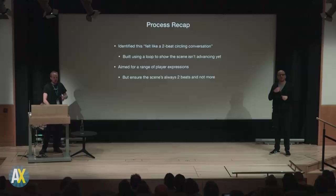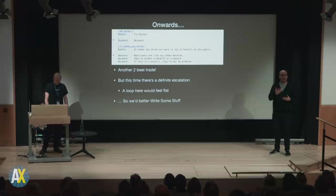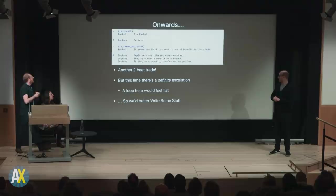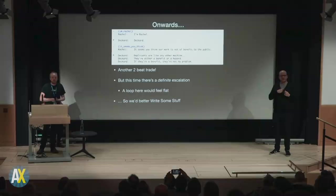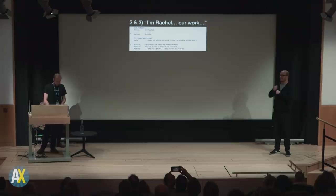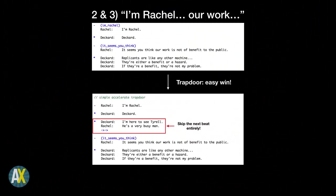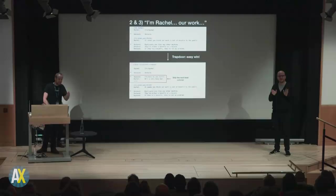Moving onwards: Rachel to Deckard — 'Do you think our work is not a benefit to the public? Replicants are like any other machine.' It's another two-beat exchange but definitely not a loop — it's got an arc, a definite escalation. If we did a loop here it would feel like cheating; we'd deflate the scene we've struggled to inflate. So at this point we'd better write some stuff, because we've got a space to write into. The first easy thing is to add a trap door: 'I'm Rachel — I'm here to see Tyrell, I'm not interested in you.' She obviously doesn't accept that lying down — she says 'well, he's a very busy man.' But we skip forward past the work-not-of-benefit business.